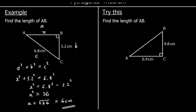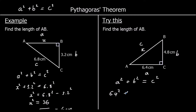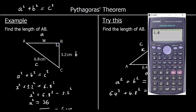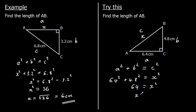The difference between the second question and the first question is that in the second question we're finding the hypotenuse — we're finding the longest side. So we're finding A to B, which is the hypotenuse, but we still use the same rule: a squared plus b squared equals c squared. This time it's going to be 6.4 squared plus 4.8 squared equals x squared. 6.4 squared plus 4.8 squared is 64, so x squared is 64. To get x by itself we square root both sides, so x is the square root of 64, which is 8 centimeters.